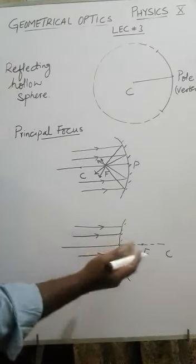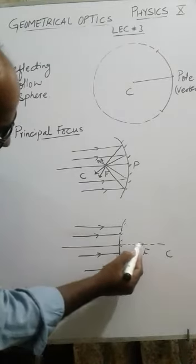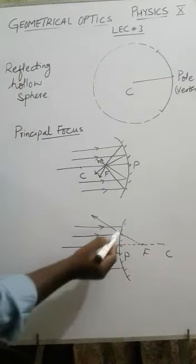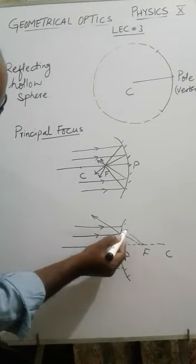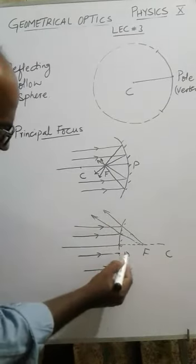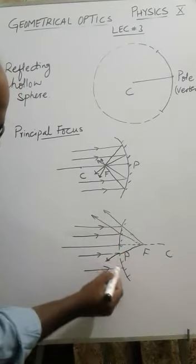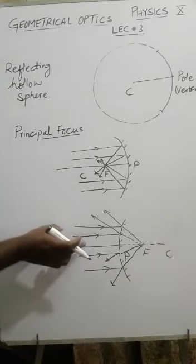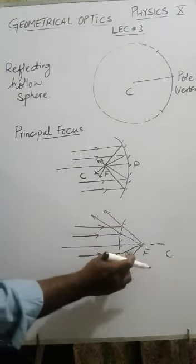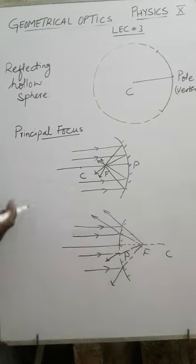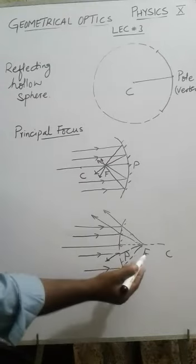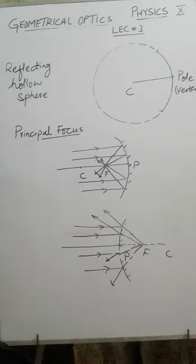When a ray comes to a convex mirror, it is bounced back. You join the point of incidence to F with a scale, and the ray is reflected accordingly. After reflection from a convex mirror, rays appear to come from the principal focus F. Since rays only appear to diverge from F but do not actually meet there, this point is known as the virtual focus of the convex mirror.